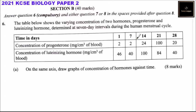Time is measured in days — day one, day seven — and the concentration of progesterone in milligrams per centimeter cube of blood is measured, as well as for luteinizing hormone. At day one, progesterone is at its lowest while luteinizing hormone is highest. At day 14, luteinizing hormone is at maximum, and progesterone keeps increasing, reaching its maximum at day 21.